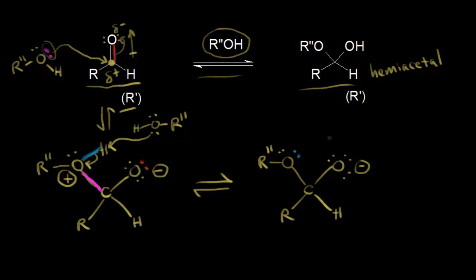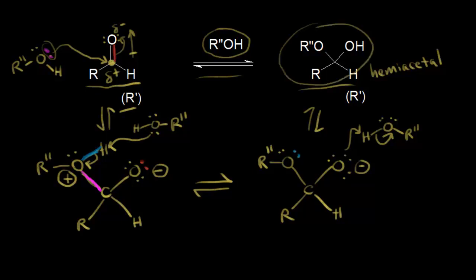We're extremely close to our product — we only need one more acid-base reaction. Alcohols are amphoteric like water, so they can function as acids and donate protons as well. Another molecule of alcohol comes along, a lone pair of electrons takes this proton, and we protonate to form our hemiacetal. We could carry through an R prime group if we had started with a ketone, and we would get that instead of the hydrogen. Both are hemiacetals, and this is the general mechanism to form a hemiacetal.